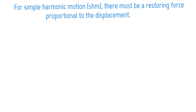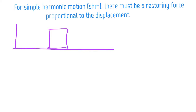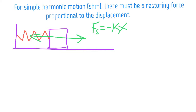For simple harmonic motion there must be a restoring force proportional to the displacement. For a mass on a spring attached to a wall, the spring force equals minus kx. This satisfies the SHM condition: as x doubles, the force doubles — they're proportional. And it's a restoring force: pull the mass away and the spring pulls it back; compress the spring and it pushes back out.